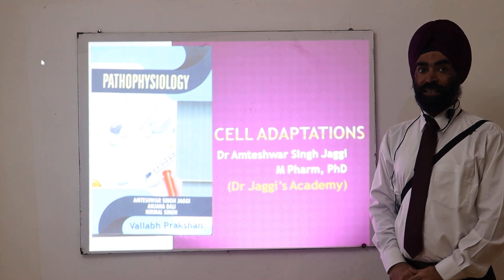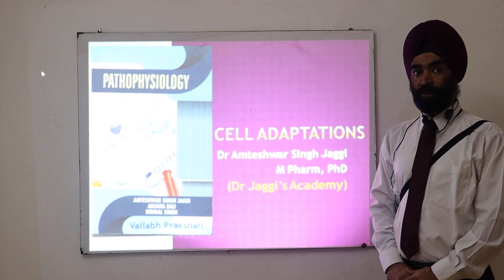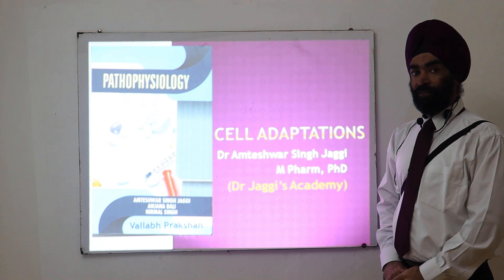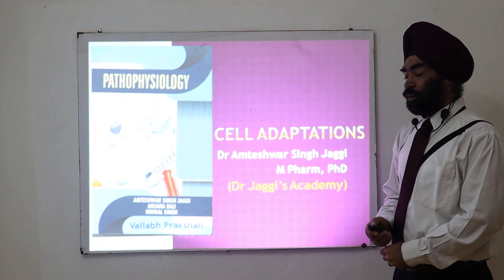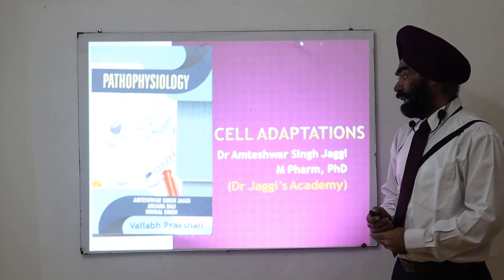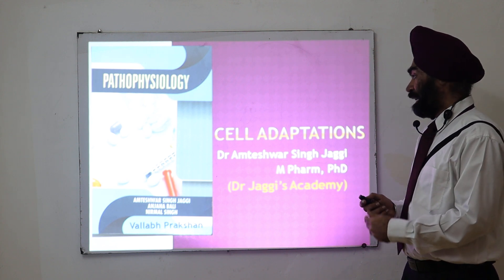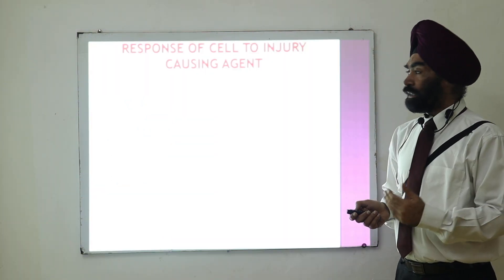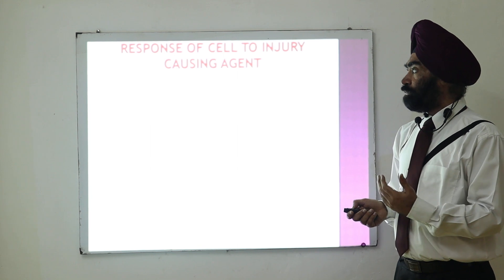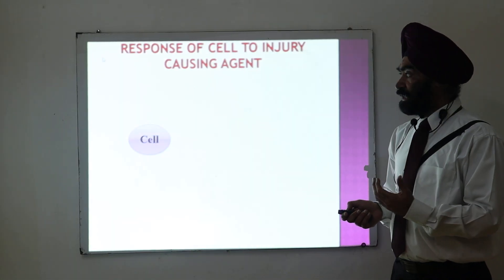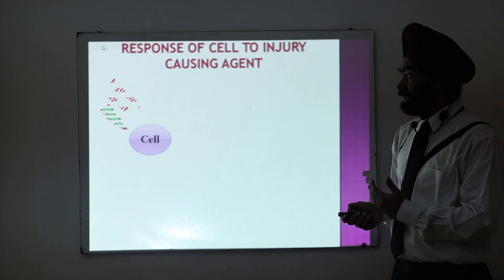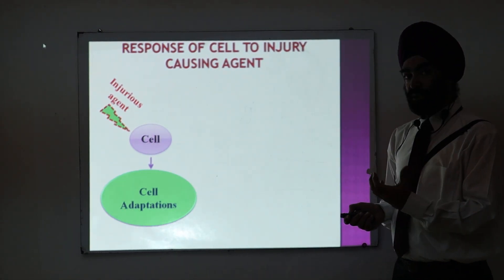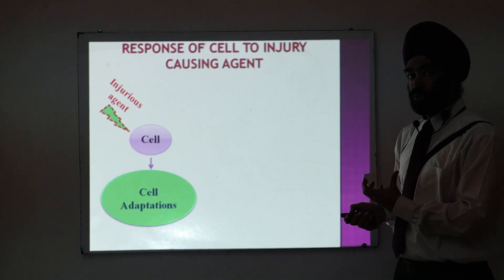Hello friends, welcome back to Dr. Jaggi's Academy. In the last two chapters we discussed homeostasis, the feedback system, and the cell injury causing agents. Continuing with that chapter related to cell injury, today I am going to discuss cell adaptations, which is a very important topic. If an injurious agent acts on a cell, one option is that the cell adapts to that injury causing agent.